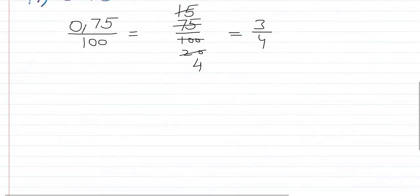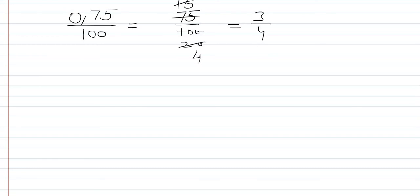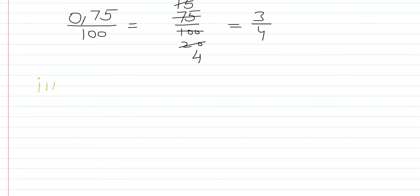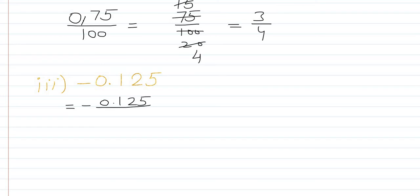Part number 3 is minus 0.125. First we place the minus sign, then write 0.125 as a fraction. We cut the decimal point and place 1 just below it. Counting digits on the right side of the point: 1, 2, and 3 — there are 3 digits — so we place 3 zeros, giving us minus 125 over 1000.